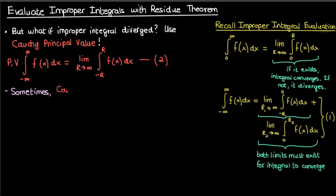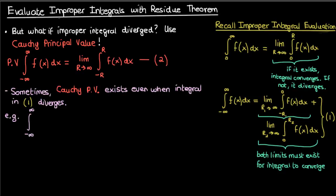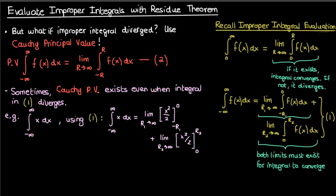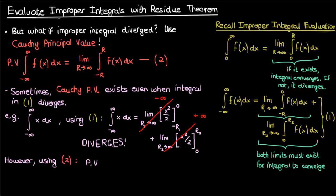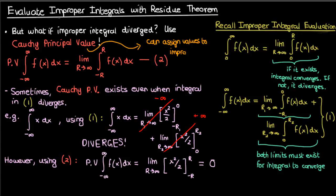In some cases the Cauchy principal value of an integral exists even when the integral diverges. Take for example the integral of x over an infinite interval. If we find the improper integral using equation one, the first term will approach negative infinity and the second term will approach positive infinity. Since the sum of negative infinity and positive infinity is undefined, this integral would diverge. However, if we find the Cauchy principal value using equation two, the answer comes out to zero. So the Cauchy principal value exists even though the improper integral itself diverges.